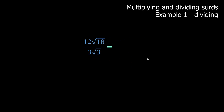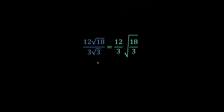12 root 18 over 3 root 3. Using our division rule, we split into 12 over 3 out front and square root of 18 over 3 inside one radical. 12 divided by 3 is 4, and 18 divided by 3 is 6. So we get 4 root 6.